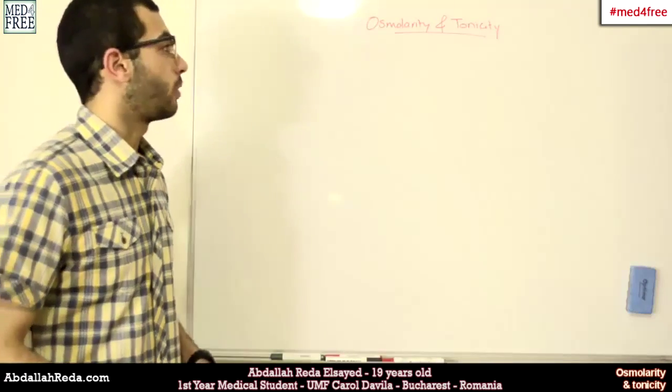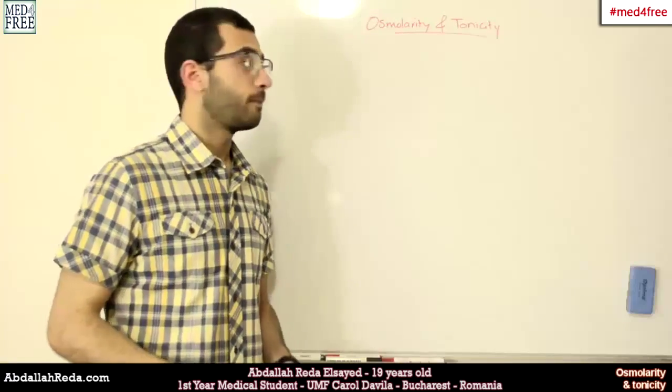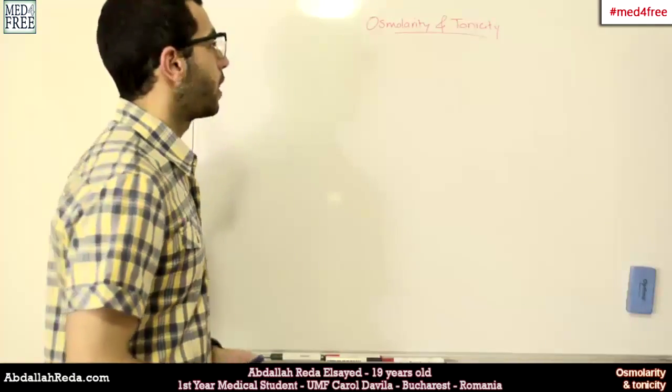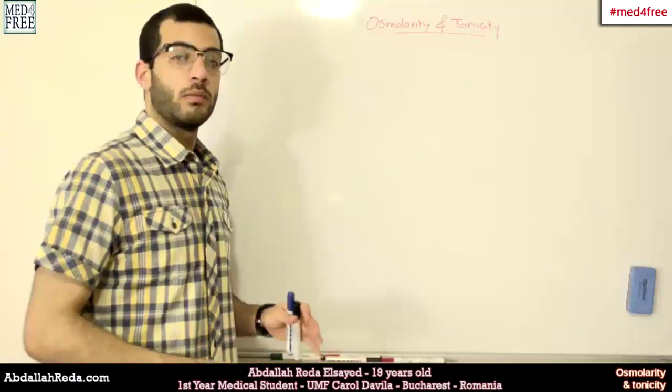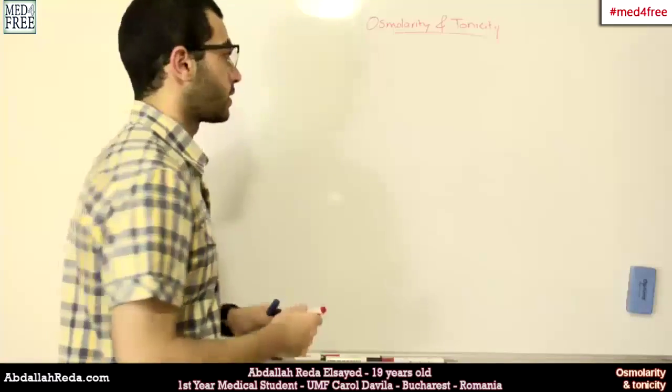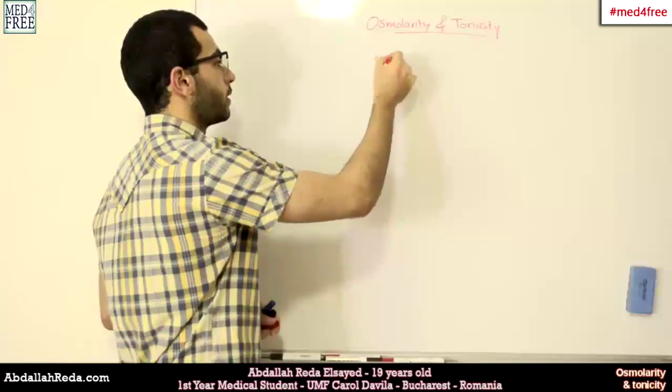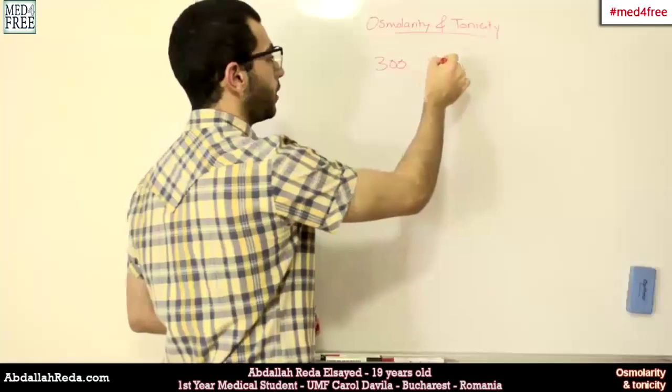This time we're going to talk about something called tonicity. Last time we mentioned that the normal body osmolarity is 300 milliosmols.